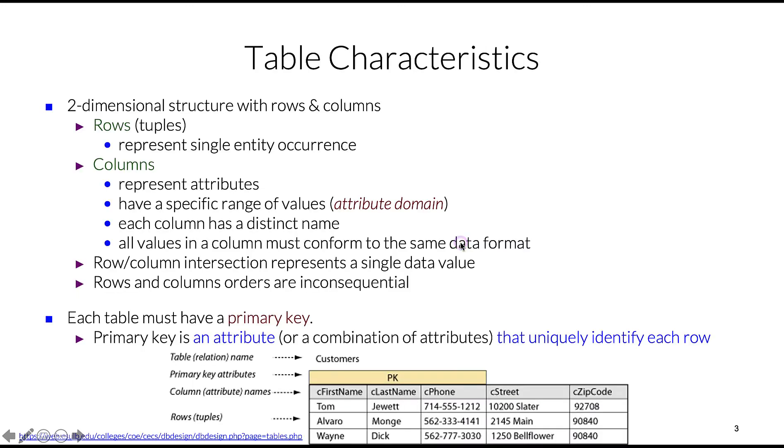The structure in a relational database is two-dimensional with rows and columns. Rows are tuples - just a single entity occurrence. Columns are attributes. Remember that each column must have a distinct name and all values in that specific column should conform to a specific data format.